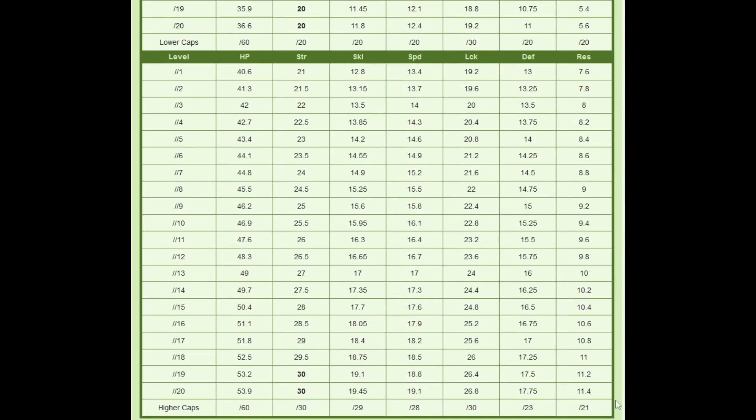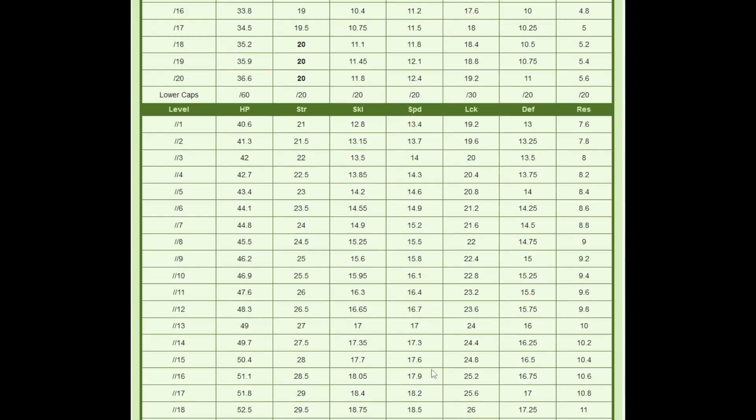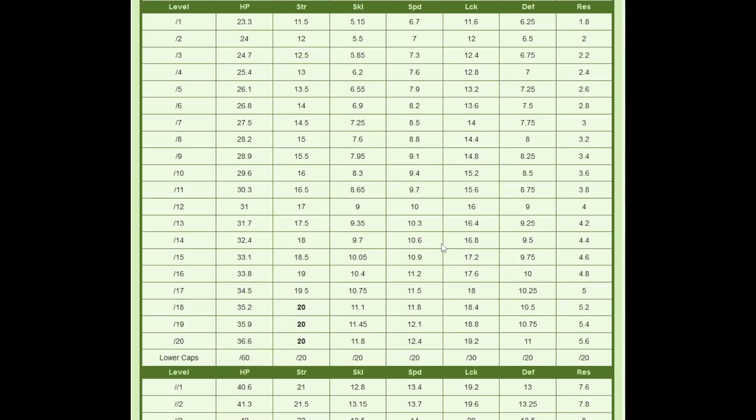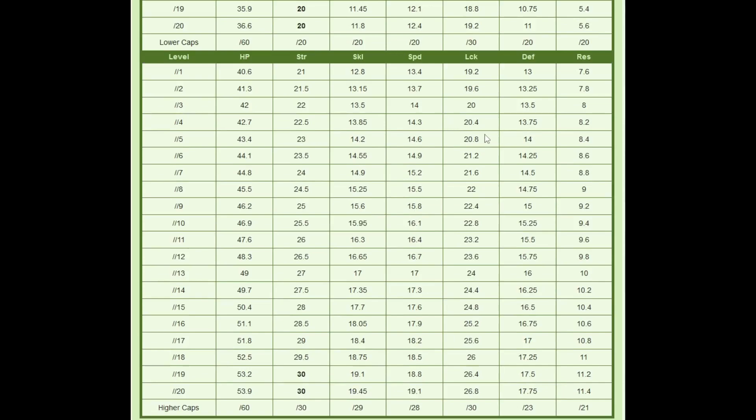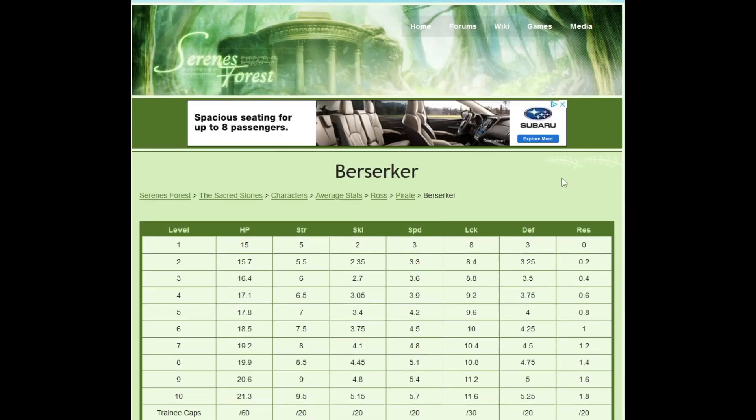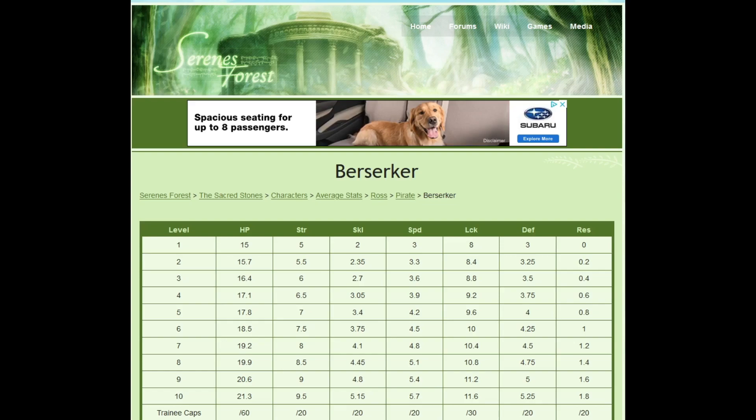If we're assuming a 10-20-20 Berserker Ross, and he has a cap speed of 28, traditional math says he will have 19.1. That also is including a 1-point increase here and a 1-point increase here from promotion. Gaining plus 1 speed to Pirate and another plus 1 to Berserker. So let's knock that around. We have 47 levels to grow.